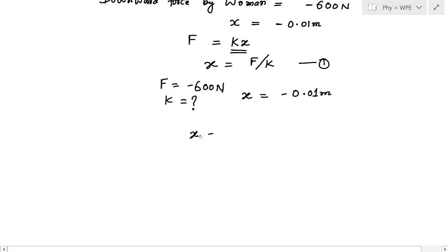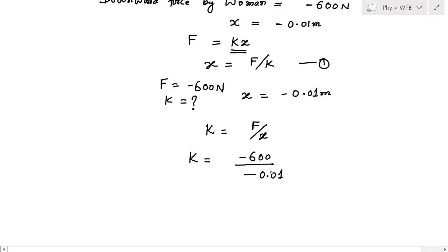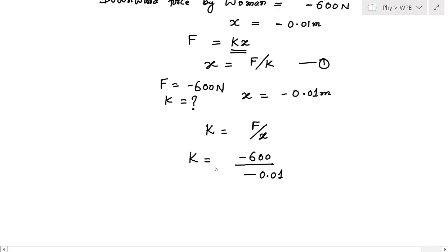Applying F = kx, I can write k equals F divided by x. So F is minus 600 Newton and x is minus 0.01 meter. Both are negative — force is negative and compression of the spring is negative. In both the numerator and denominator you see a negative sign. Solving, k equals 6 × 10⁴ Newton per meter. This is the force constant value for this spring.